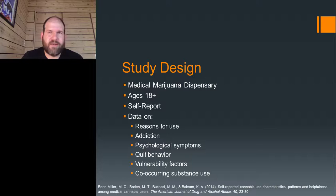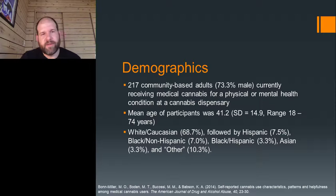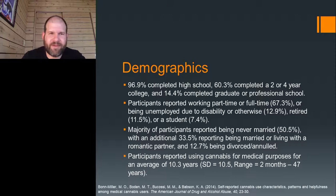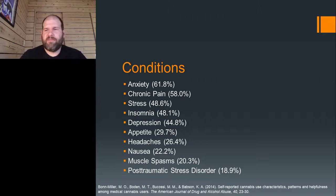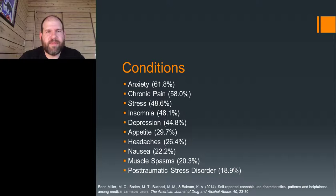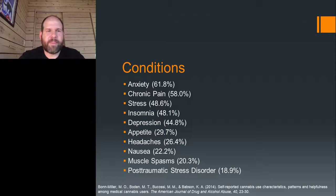Here's an example from the consequences side: an observational study in a medical cannabis dispensary among about 217 adults — majority white, conducted in the San Francisco Bay area — where individuals self-reported on symptomatology. The top 10 reasons individuals reported using medical cannabis were anxiety, chronic pain, and all the way down through post-traumatic stress disorder. The percentages overlap because individuals are using for multiple reasons — anxiety and chronic pain and depression together, for example. Most studies since find that anxiety and chronic pain are the top two reasons, flip-flopping for the number one condition why individuals use medical cannabis.